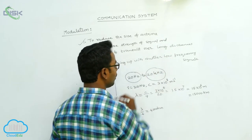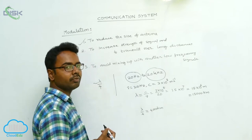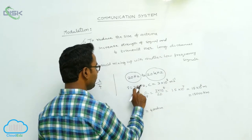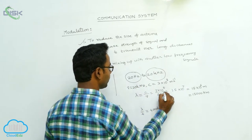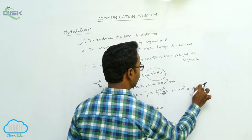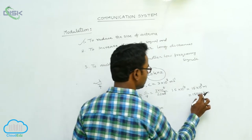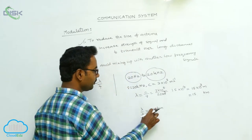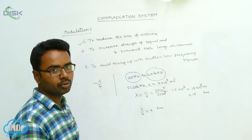Let us try to find, for transmitting signals of 20 kHz, how much wavelength is there and what is the minimum size of the antenna. Lambda = C/nu, where nu is 20 kHz = 20×10^3 Hz. The result is approximately 1.5×10^4 m, or 15,000 m, which is 15 km. Lambda/4 is approximately 4 km. Even so, a 4 km antenna height is also practically not possible to construct.